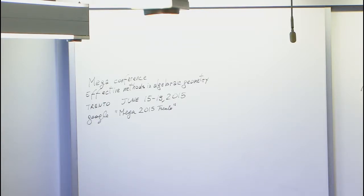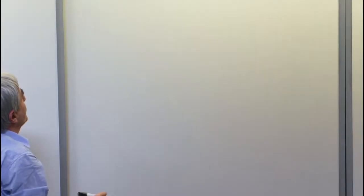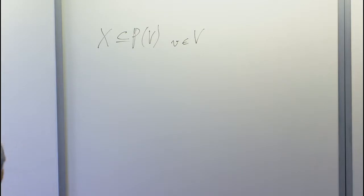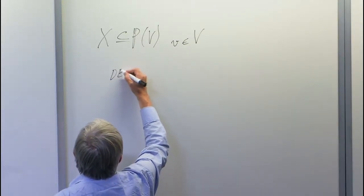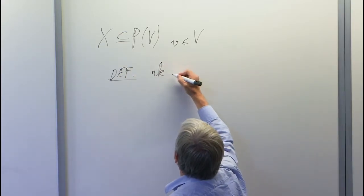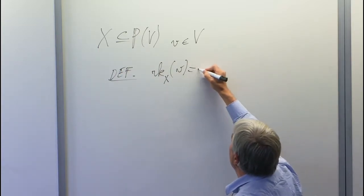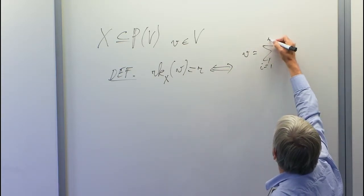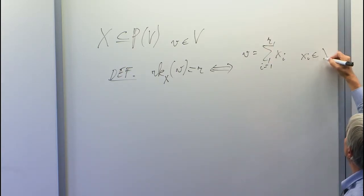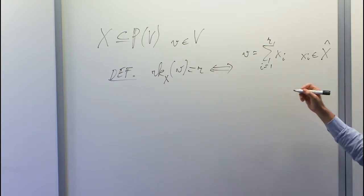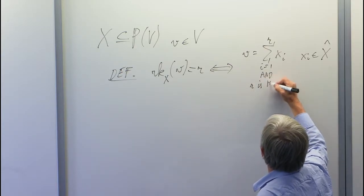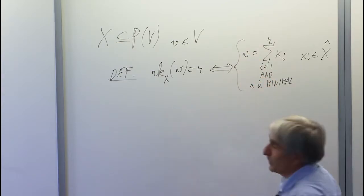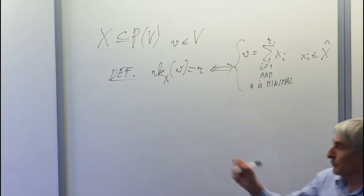I start with a variety X, a projective variety in P(V), which I assume does not contain any hyperplane. Pick a vector V in the vector space — I sometimes switch between affine and projective, which is quite convenient. The rank of your vector V with respect to X is R, which means you can write your vector as a sum of R points in the cone of X, and R is minimal. So this is the minimal decomposition.